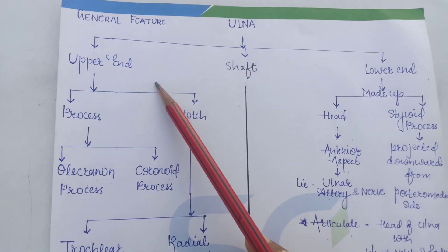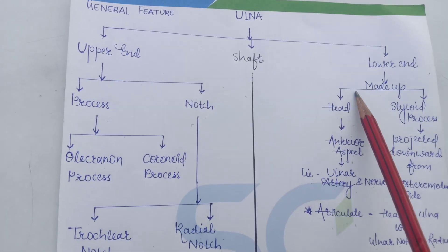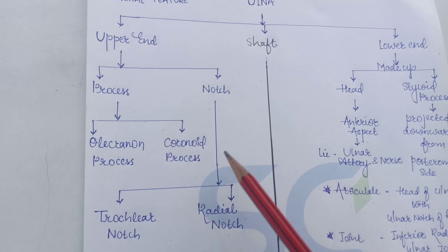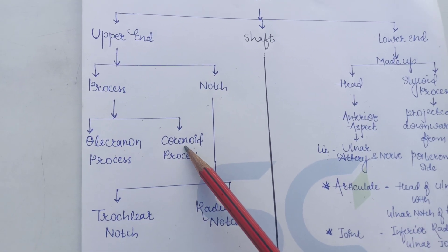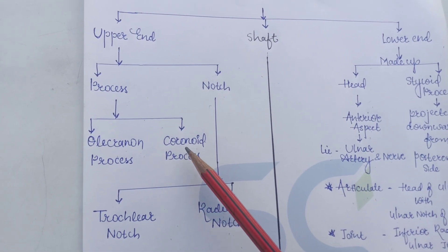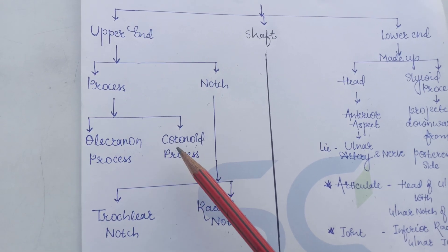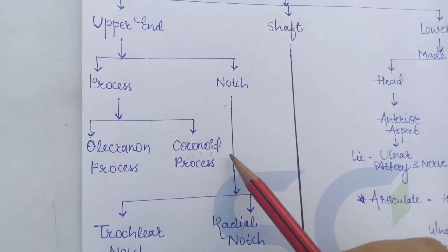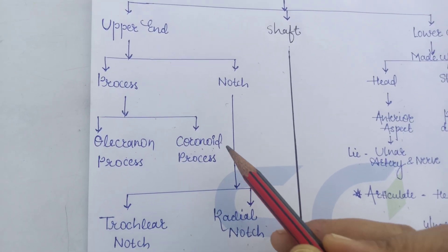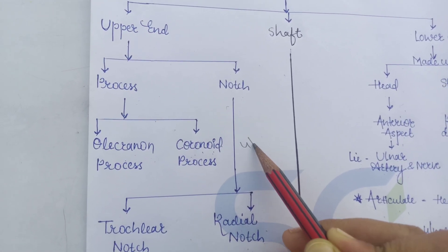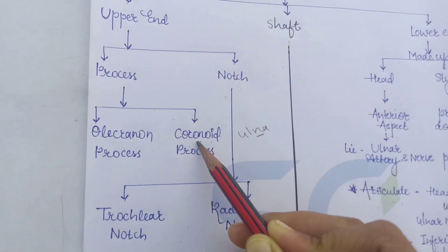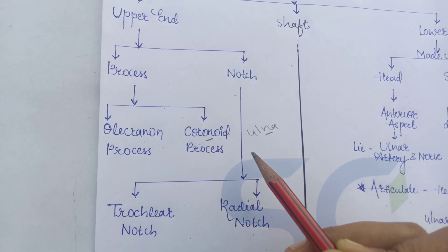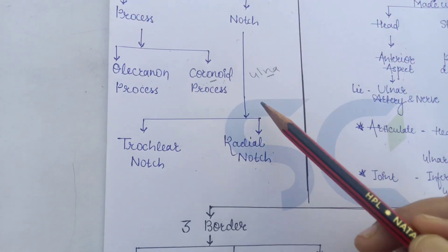To recap: as it is a long bone, it has an upper end, shaft, and lower end. The upper end has two processes and two notches. The processes are the olecranon process and the coronoid process — not coracoid; coracoid is present in the scapula. Remember: ulna has the coronoid process.